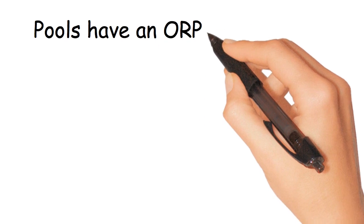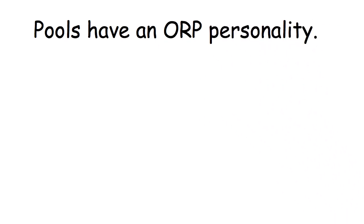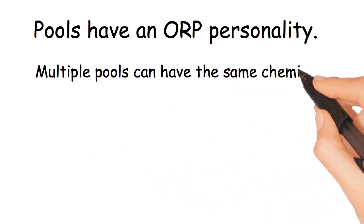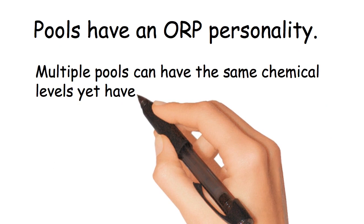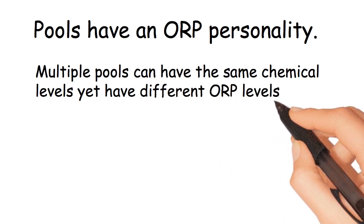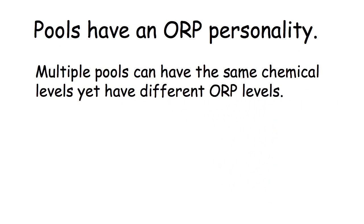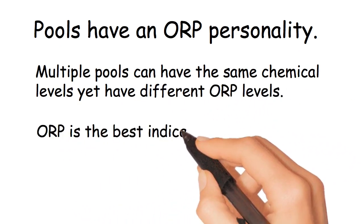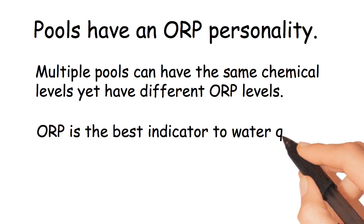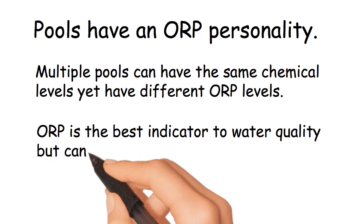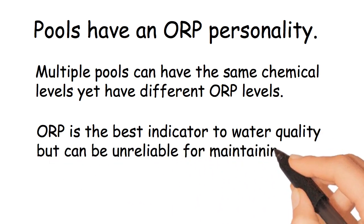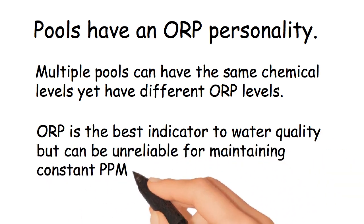Variable 4: Pools have an ORP personality. Multiple pools can have the same chemical levels yet have different ORP levels. ORP is the best indicator of water quality, but can be unreliable for maintaining constant PPM levels.